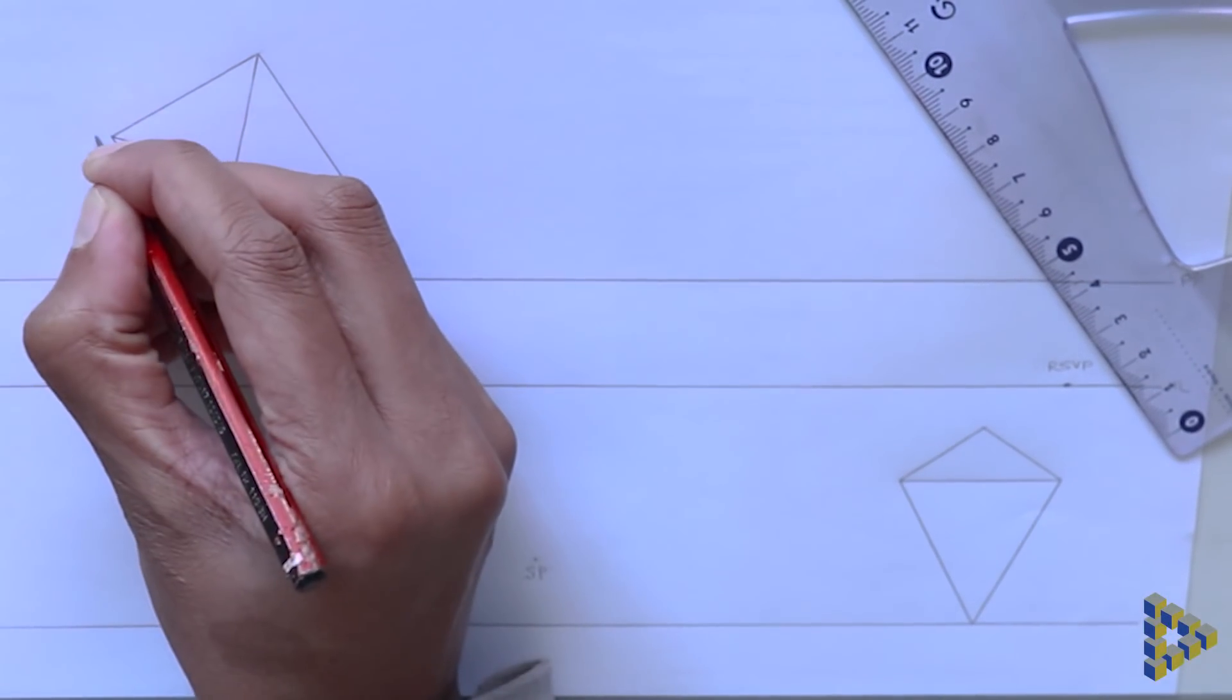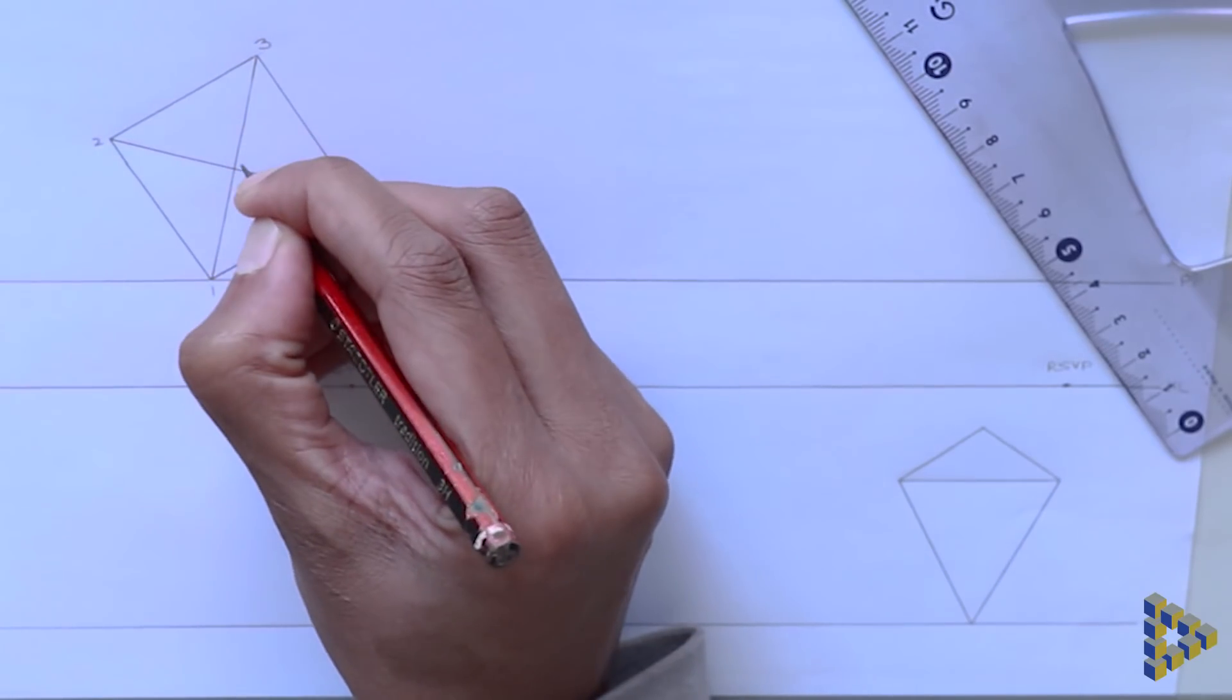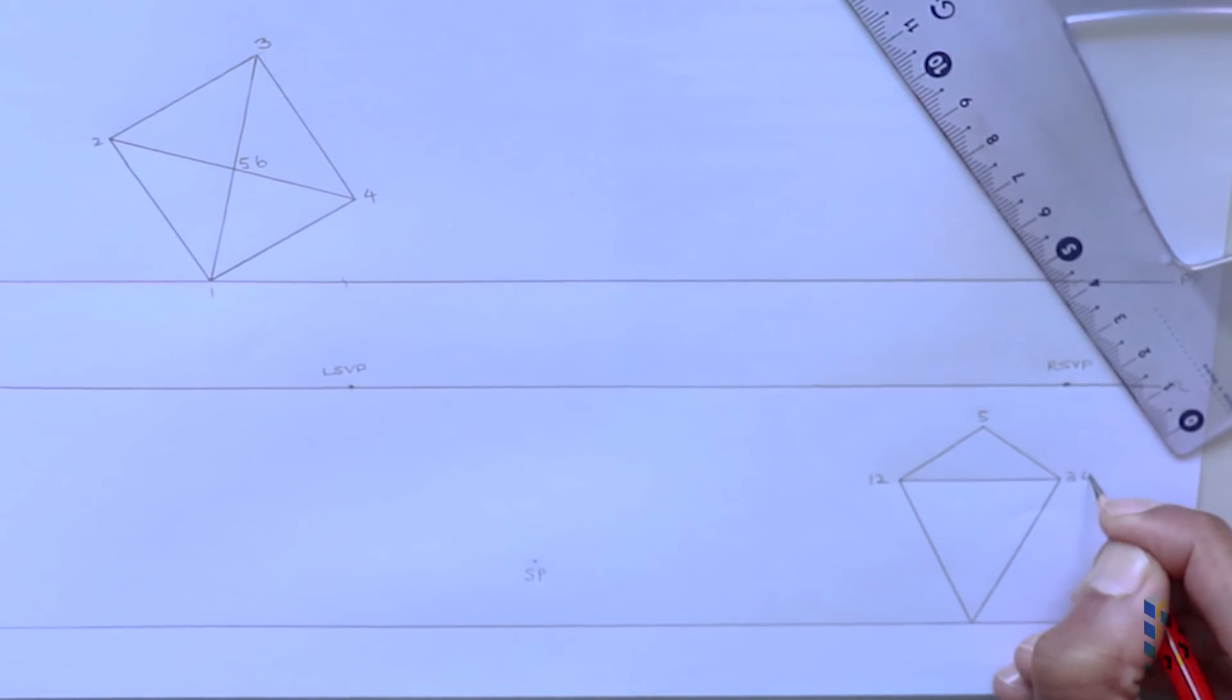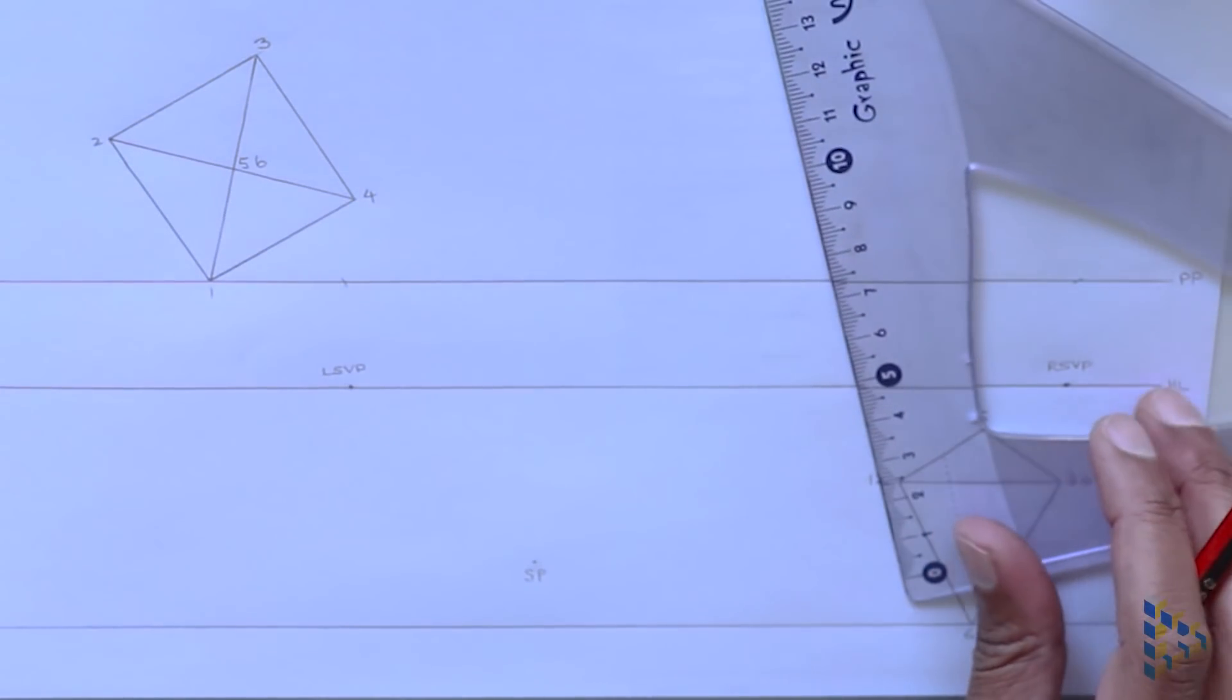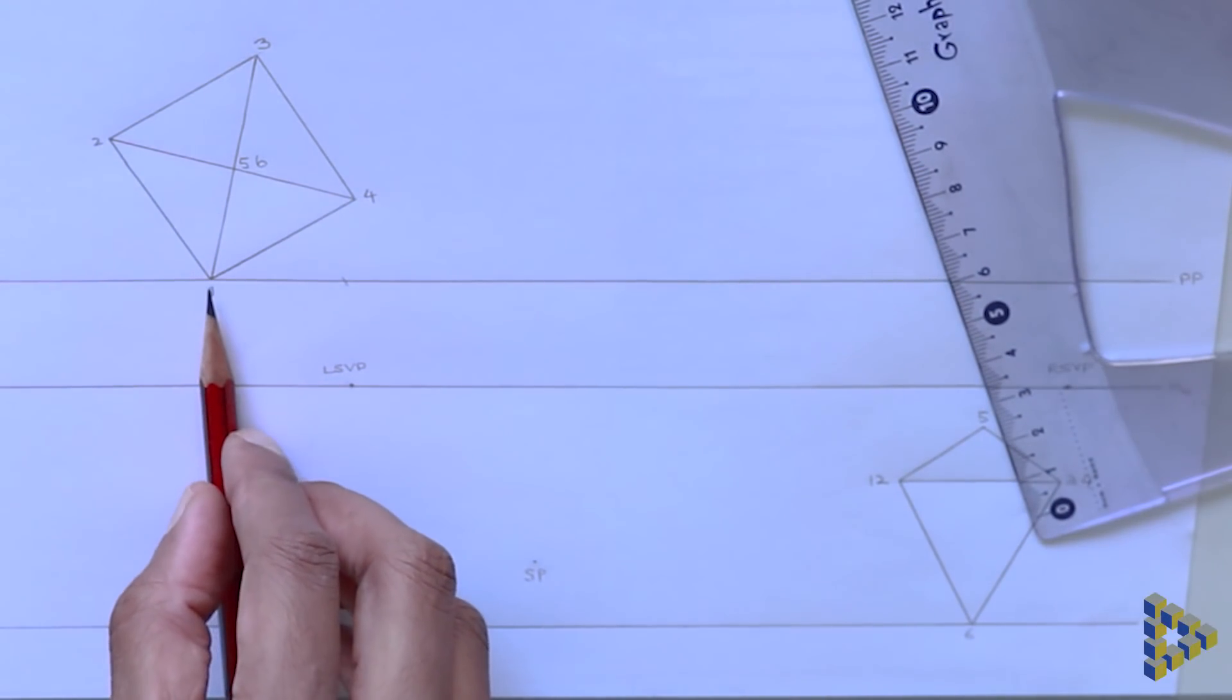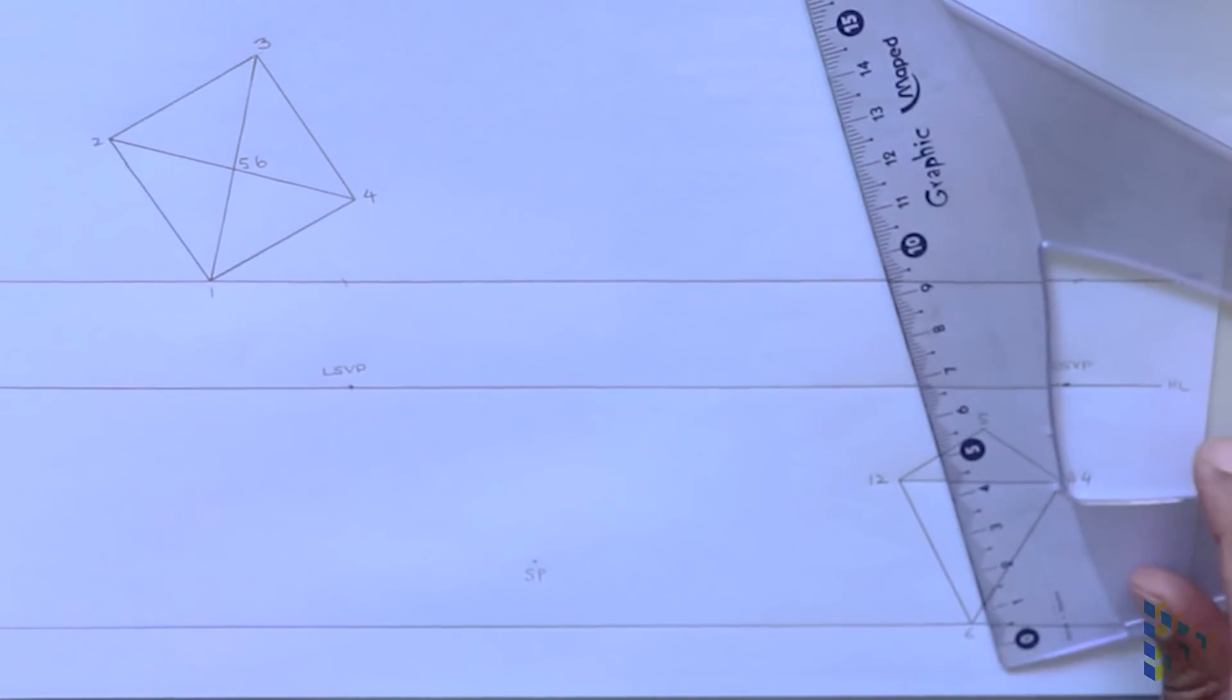We then label all the corners making up our drawing on the top and side view. We then bring down the true point from the top and side view. Where the lines intersect is our true point.